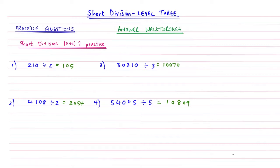The answer to the first one is 105, the answer to number 2 is 2054, the answer to number 3 is 10,070, and the answer to number 4 is 10,809. Well done if you've got all those right.